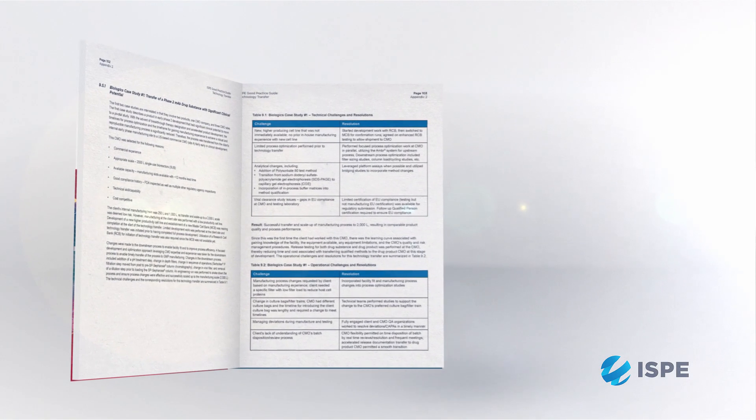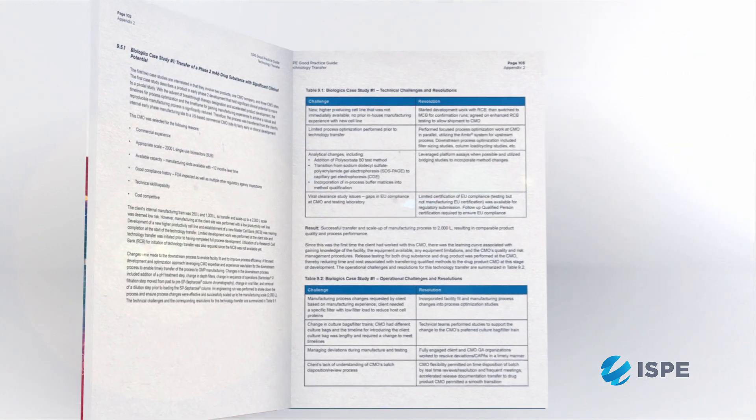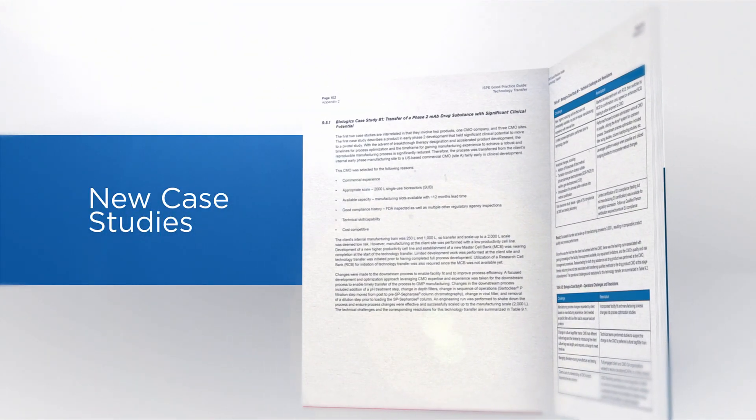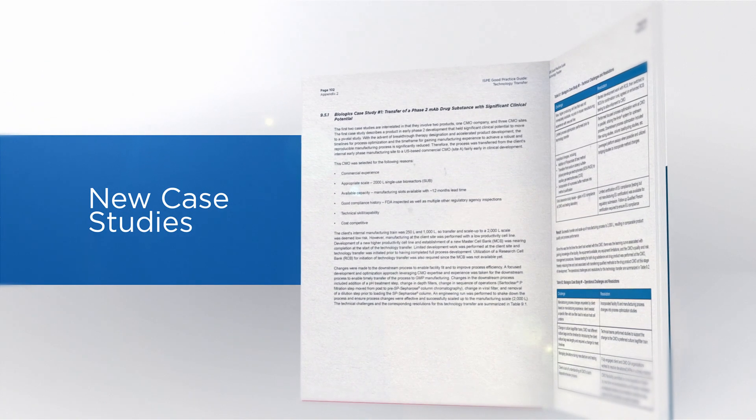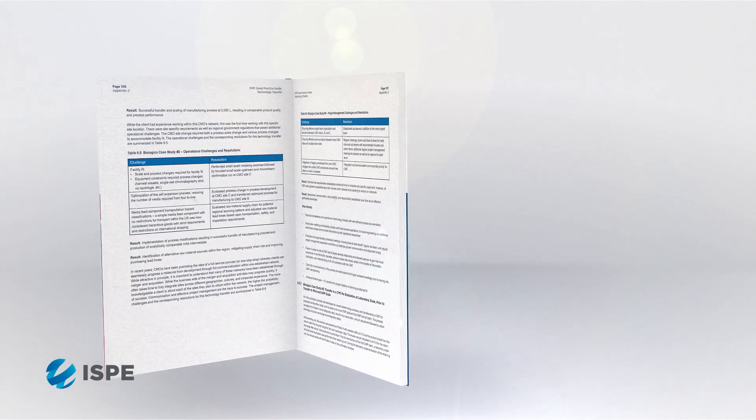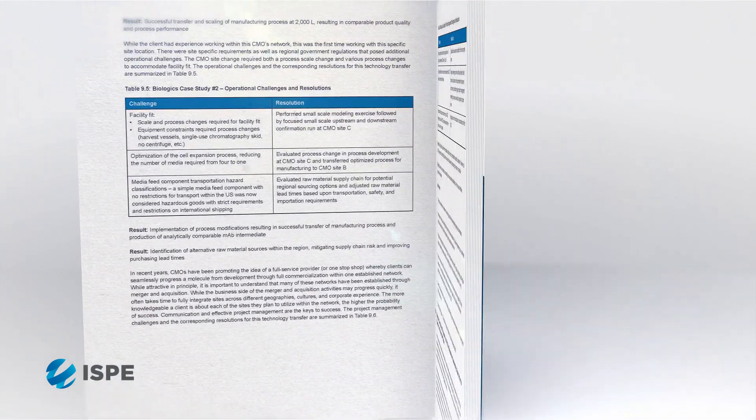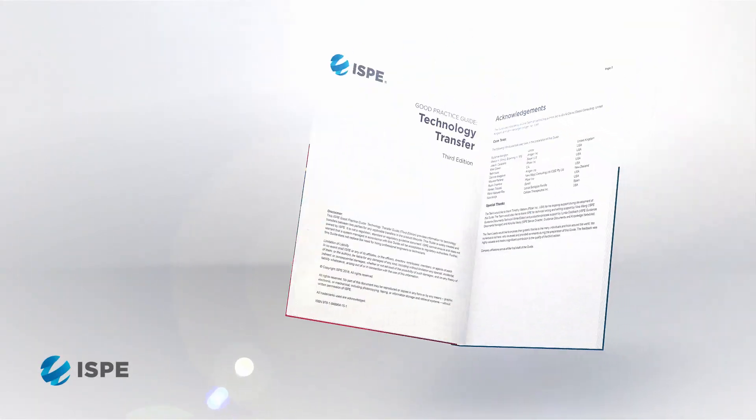In order to move technology transfer forward more effectively, what's new in the guide specifically is new case studies. These case studies describe contract manufacturing transfers between contract manufacturing facilities, bring into consideration cultural differences between companies, the application of the phases of technology transfer, and the requirements laid out in the early chapters — with specific examples in a more flexible approach.